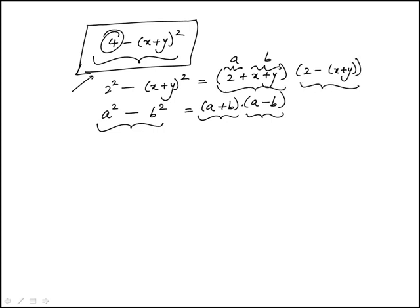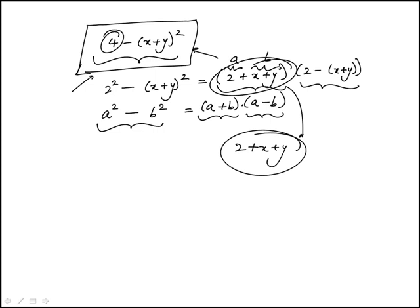So these would be the two factors. I'm going to glance at the answer choices, and I notice that 2 plus x plus y is indeed one of the answer choices. So this is a factor of the original expression, and this is the same as answer choice D.